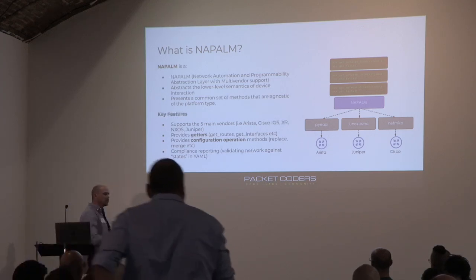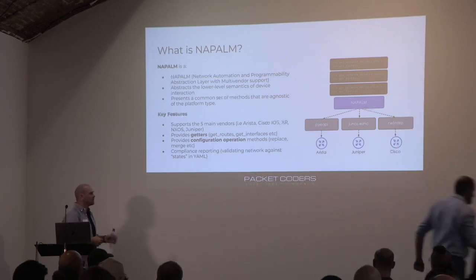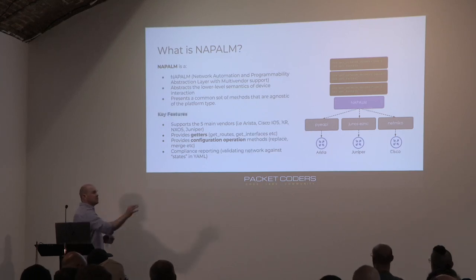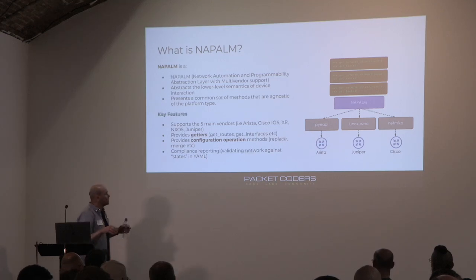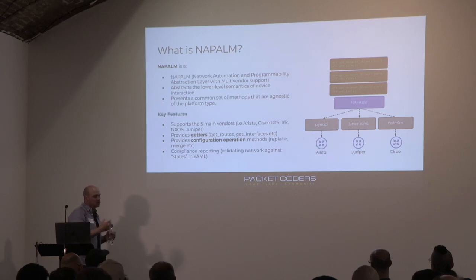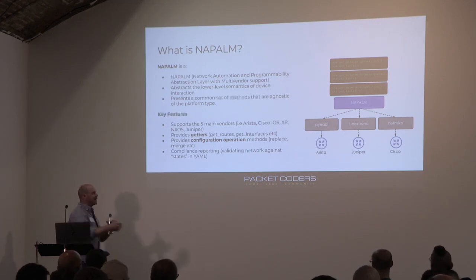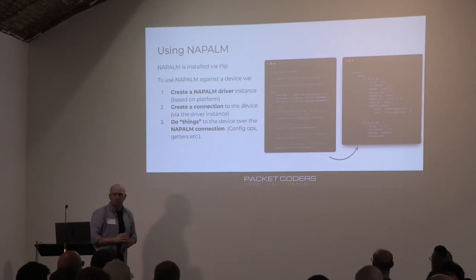You just call get_routes or get_interfaces and the structured data you get back is the same regardless of vendor. Every now and then a few keys might be missing, but generally you get that same structured data. We're going to use NAPALM to go out to all of these different vendors, get the data back, and place it into Pandas for analysis. You can also do compliance reporting with NAPALM — running getters against a manifest to check how your network looks.